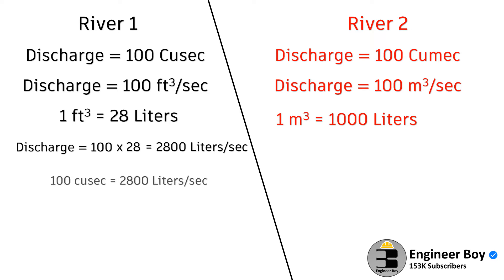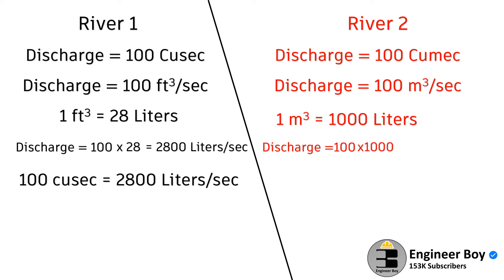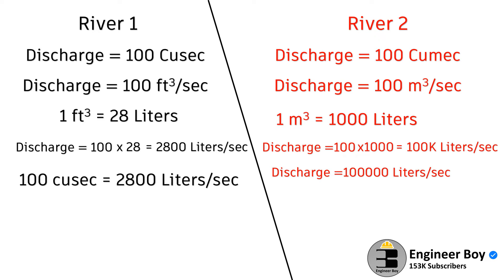That means if River 1 is flowing at the rate of 100 QSIC, that means 2800 liters per second — that's the discharge of River 1. If you consider River 2, that means 100 times 1000, because we are converting 100 cubic meters into liters. So 100 times 1000 is 100,000 liters per second. So for non-technical persons: River 1 is flowing at the rate of 2800 liters per second, and River 2 is flowing at the rate of 100,000 liters per second. That's so simple.